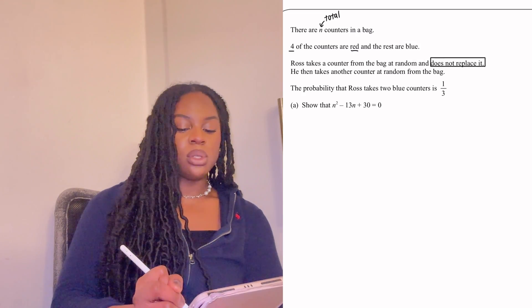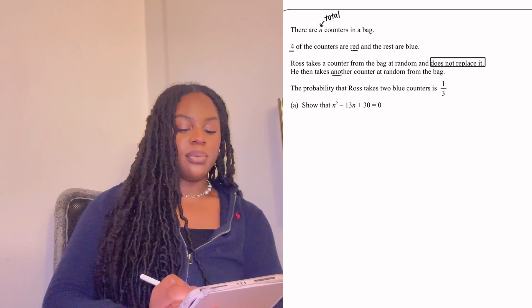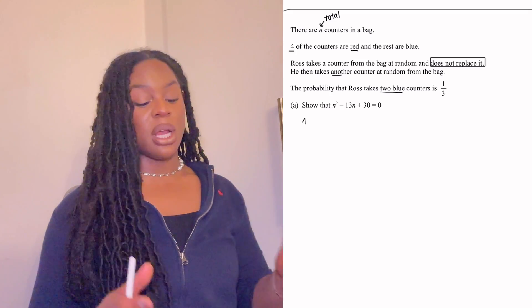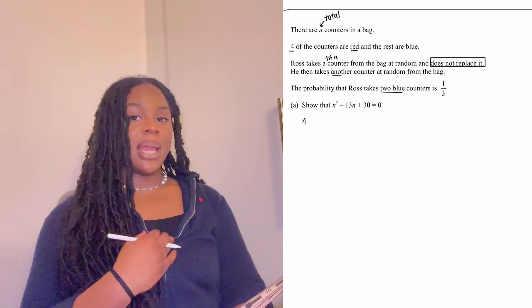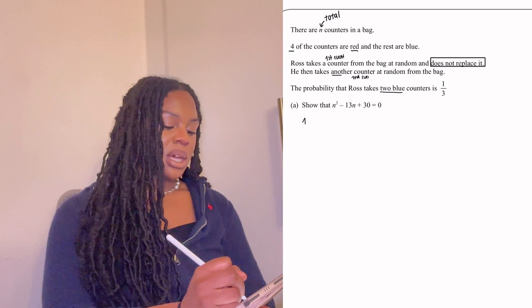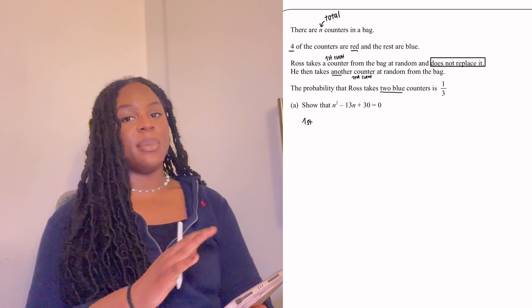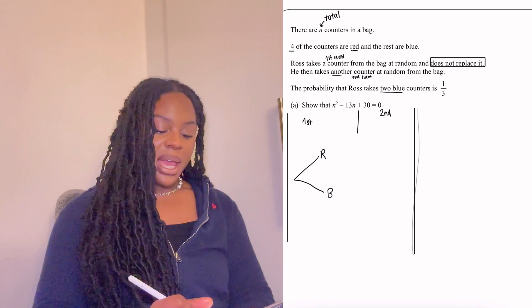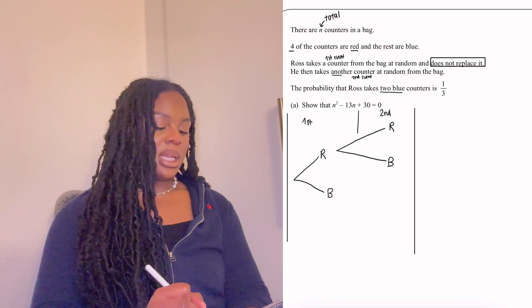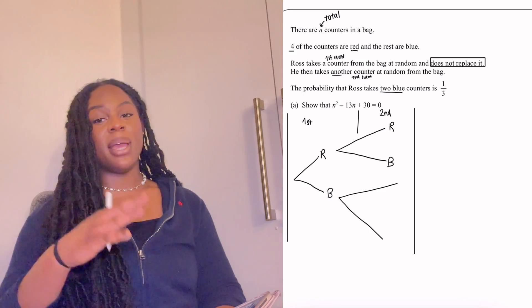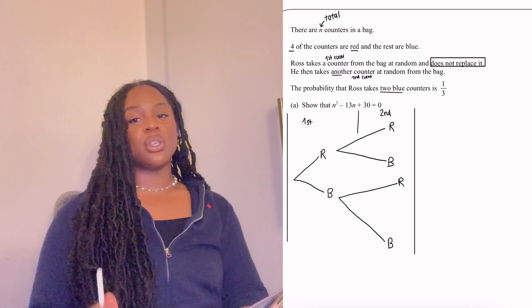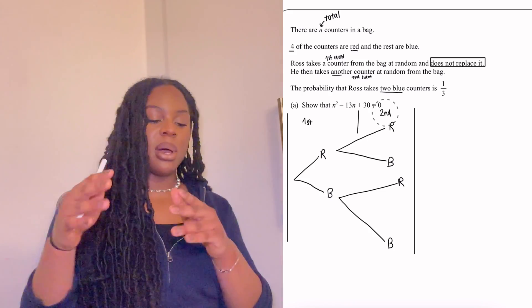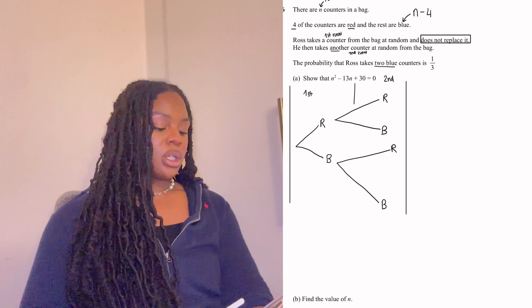To visualise this better, we're going to draw a probability tree. There are two events: he takes a counter the first time, then takes another one — so two events, and they're not independent of each other. There are only two colours. First event: he could get red or blue. Second event after getting red: he could get red again (red-red) or blue (red-blue). If he picked blue the first time, the next time he could pick red or blue. So those are all four branches of the tree.